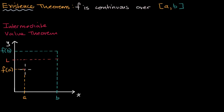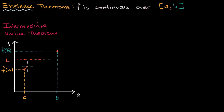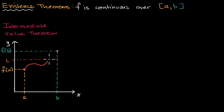I challenge you: try to draw a continuous function that goes from (a, f(a)) to (b, f(b)) that does not go through L. If you're continuous, you've got to go through L. The only way you could avoid going through L is if you're discontinuous — if you had a discontinuity right there, then you could avoid it, but we're assuming that we're continuous over the interval.